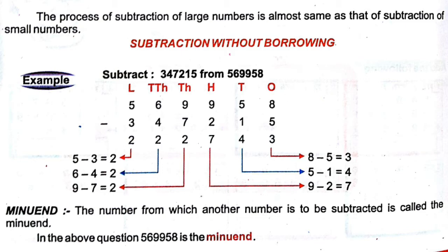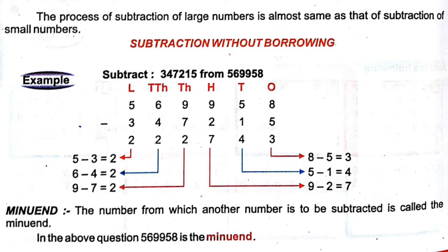See the given example. We will subtract from the ones column. 8 minus 5 equals 3. Tens column: 5 minus 1 equals 4. Hundreds column: 9 minus 2 equals 7. Thousands column: 9 minus 7 equals 2. Ten-thousands column: 6 minus 4 equals 2. Lakhs column: 5 minus 3 equals 2. So the answer is 2,22,743.